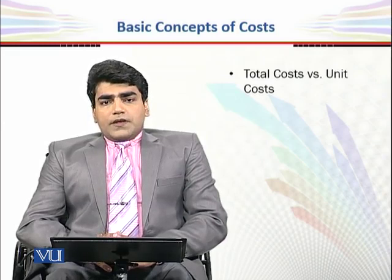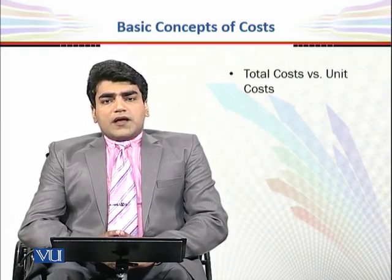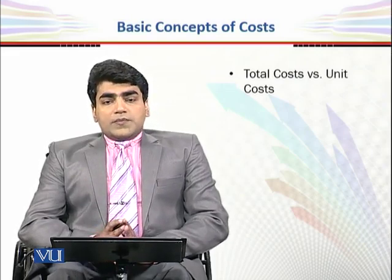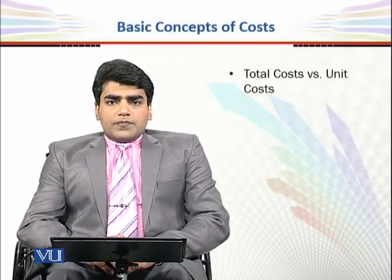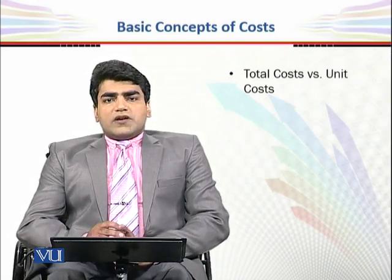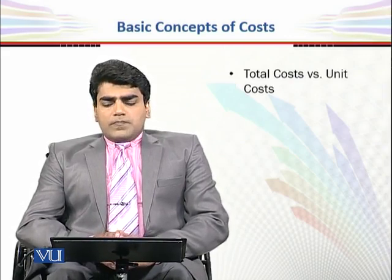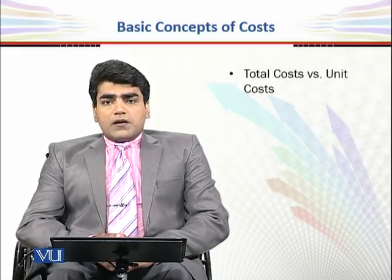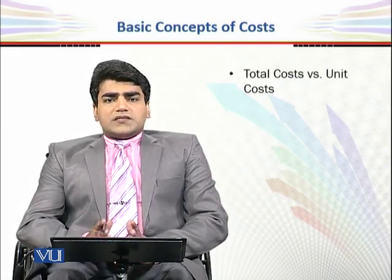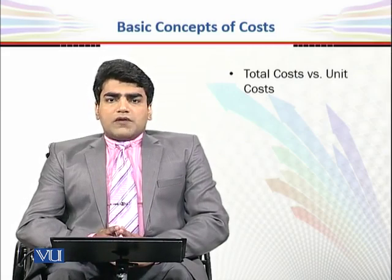اس کے بعد ہم دیکھتے ہیں کچھ concepts cost کے حوالے سے جن کو ہم one by one details سے پڑھیں گے۔ یہاں مقصد یہ ہے کہ آپ ان terminologies کو دیکھیں۔ سب سے پہلے total cost اور unit cost — total cost یعنی sum of all expenditures، اور per unit cost = total cost divided by number of units۔ مثال کے طور پر اگر 100 units بنائیں 500 روپے میں تو per unit cost = 500 ÷ 100 = 5 روپے۔